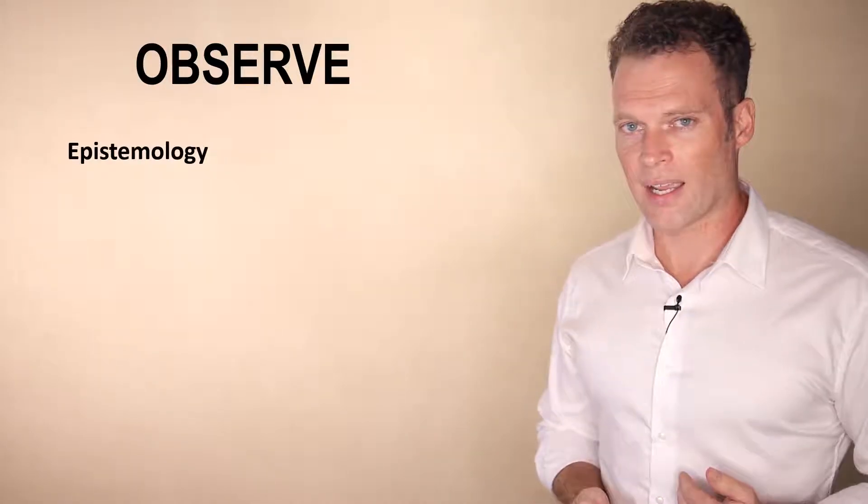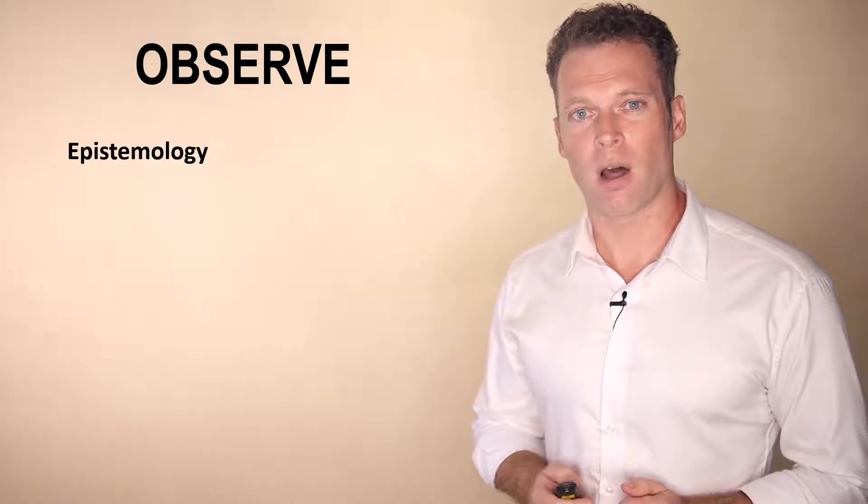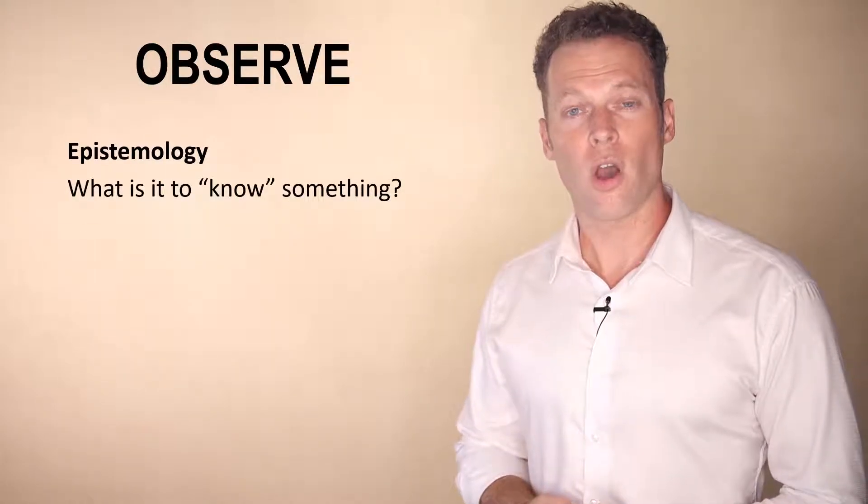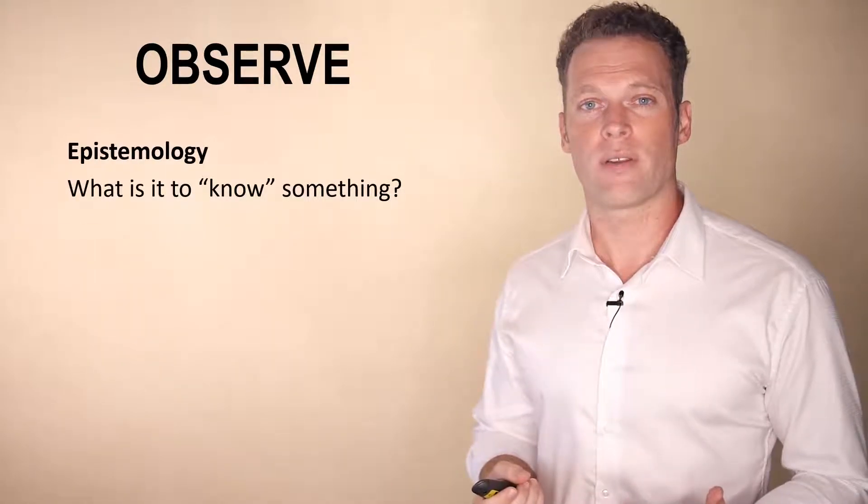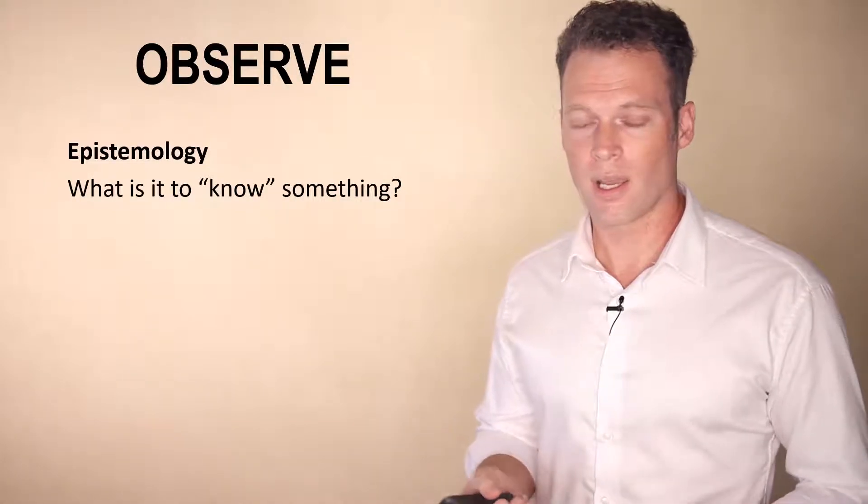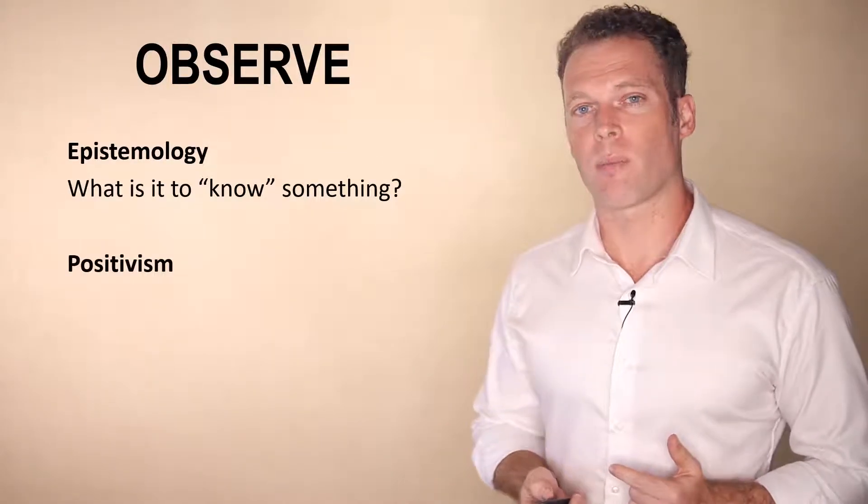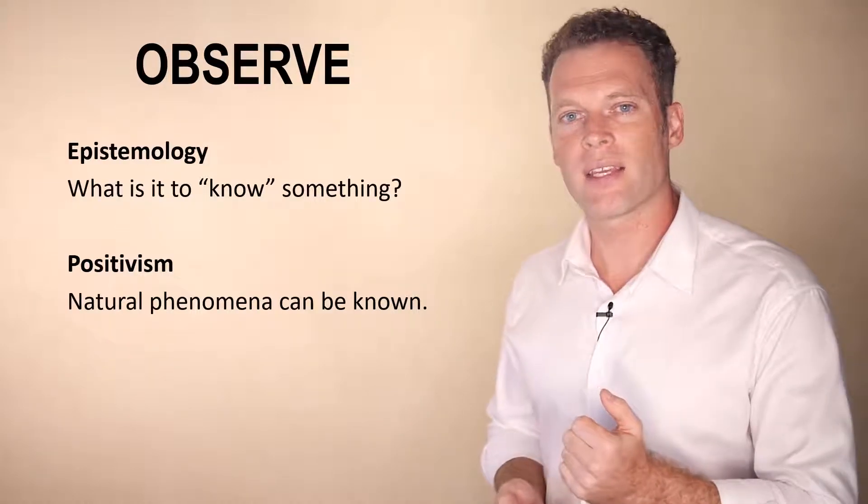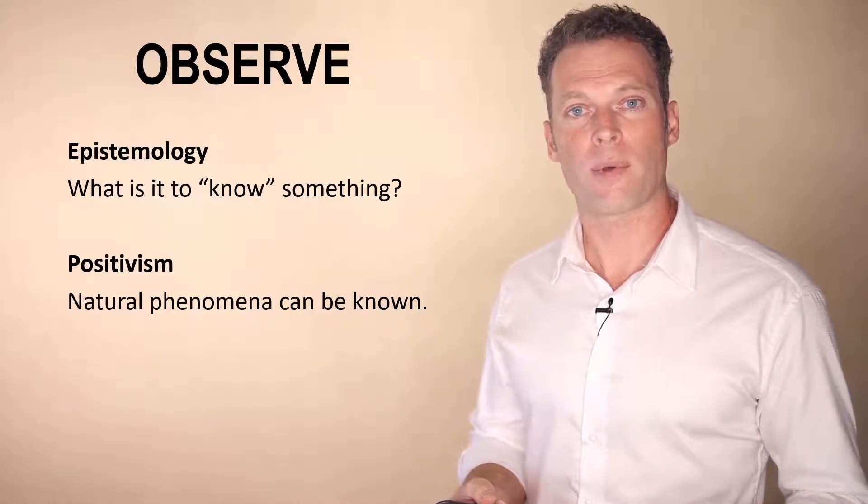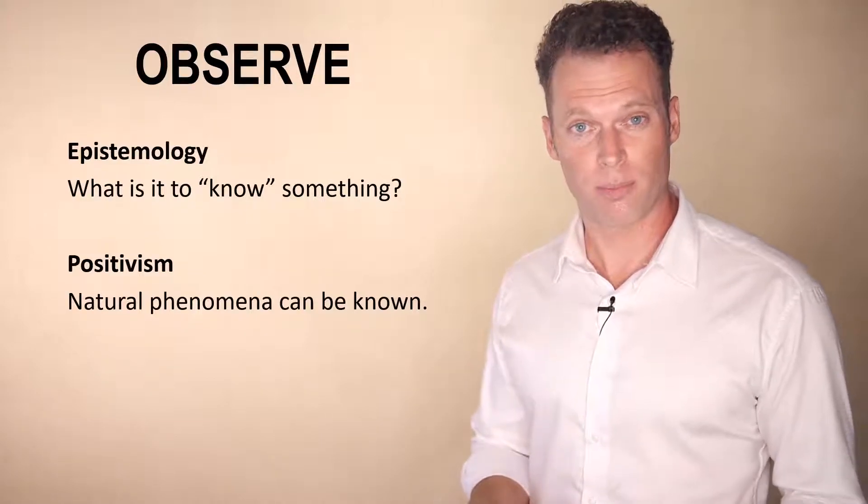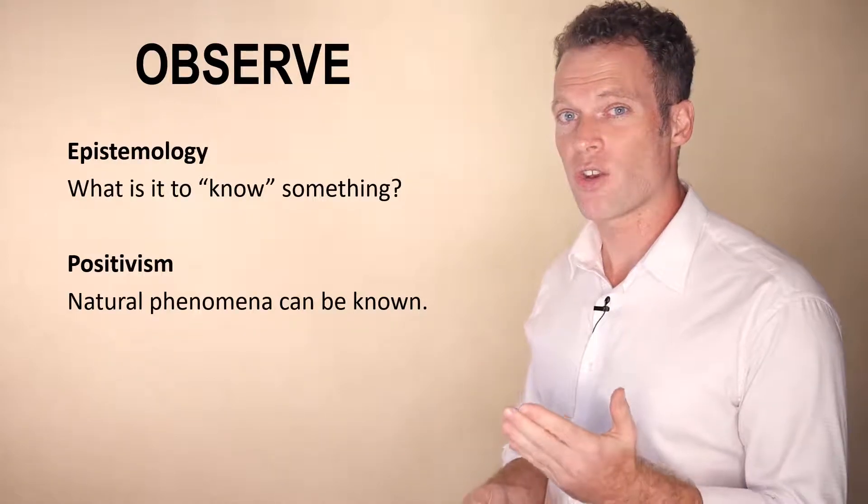Well, let's take a step back and talk about epistemology. Epistemology is the philosophy of knowing. It covers all the different ways people can come to know things about the universe. And one branch of epistemology is positivism. The idea of positivism is that there are natural phenomena that exist outside of subjective human experience, and we can know these.